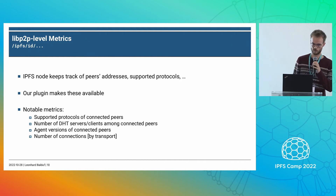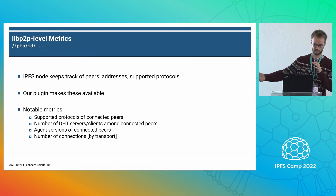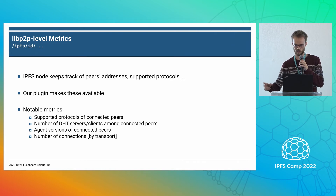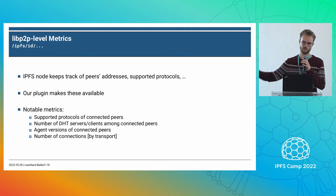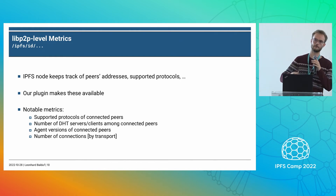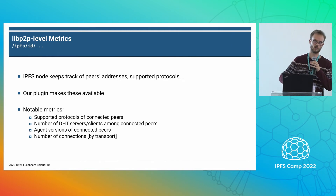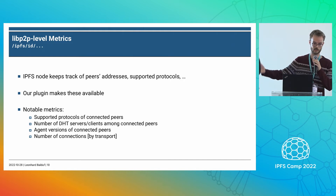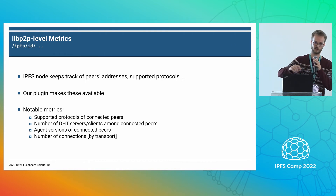Let's talk about the ID protocol. Every IPFS node runs this and exchanges information about streams, supported protocols, agent version, public key, and so on. Our plugin exports this for real-time analysis. We can see all peers we're connected to, what protocols they speak, what agent versions they're running, what transport protocols they support, and the number of DHT servers versus DHT clients. Surprisingly, we are connected to DHT clients much more often than to DHT servers. So our passive monitoring setup lets us look at the fringe of the network, whereas DHT crawling looks at the core.